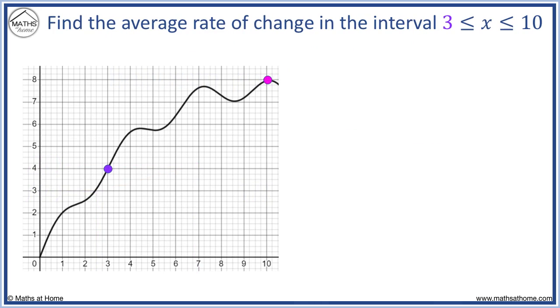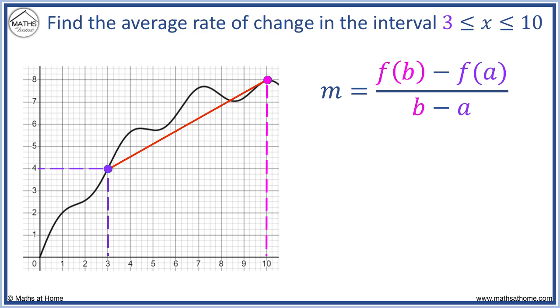For example, find the average rate of change in the interval from three to ten. Point A is at x equals three. Therefore, f of A equals four. At point B, x equals ten. f of B equals eight.